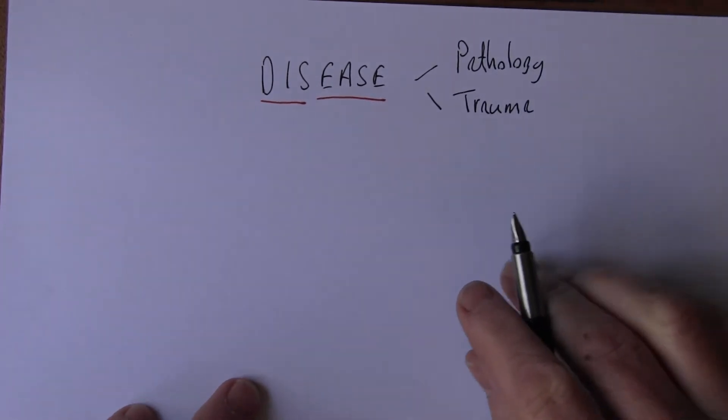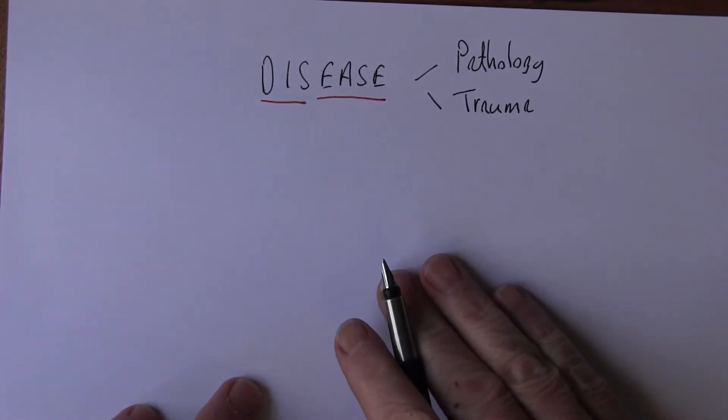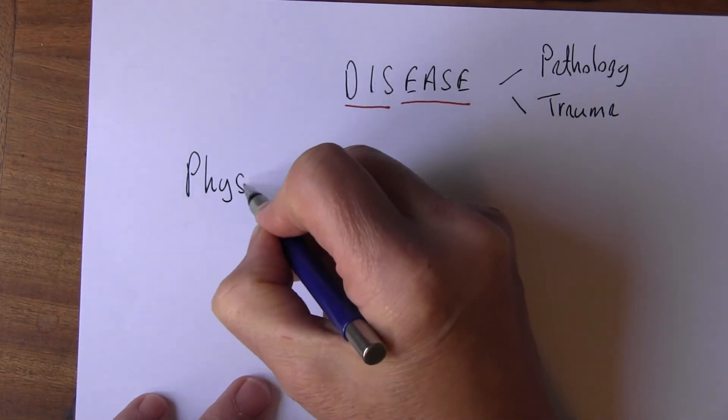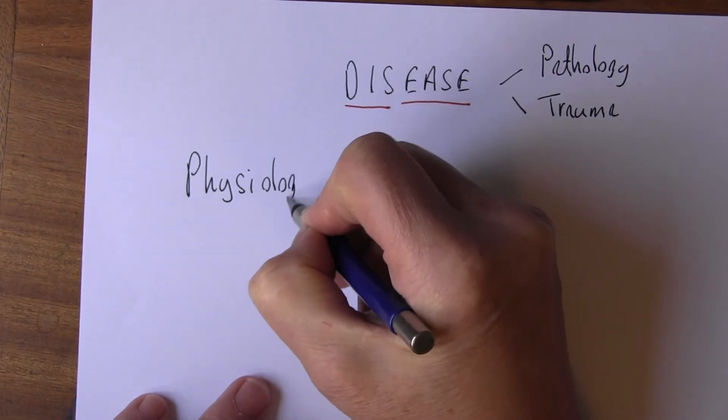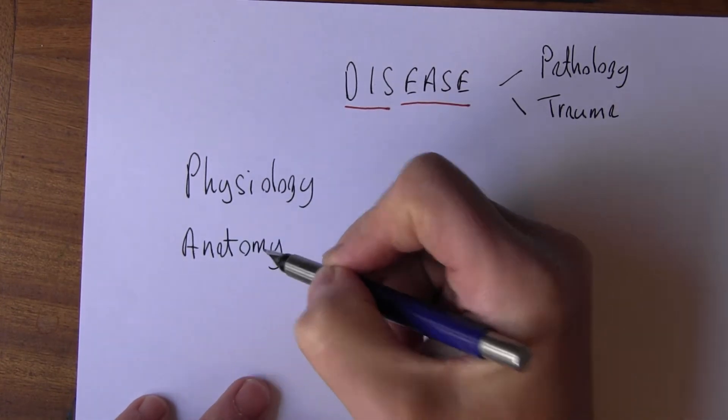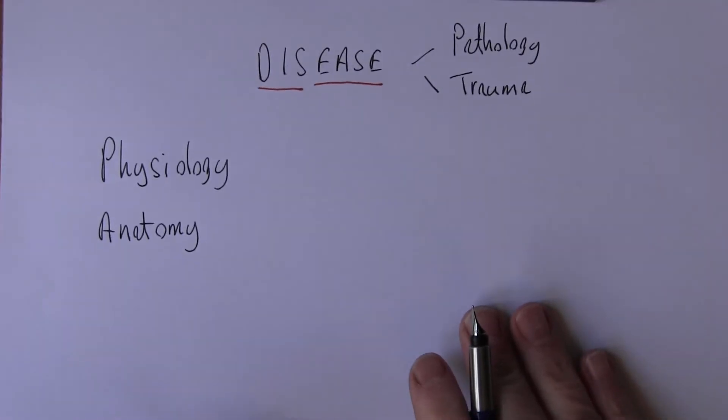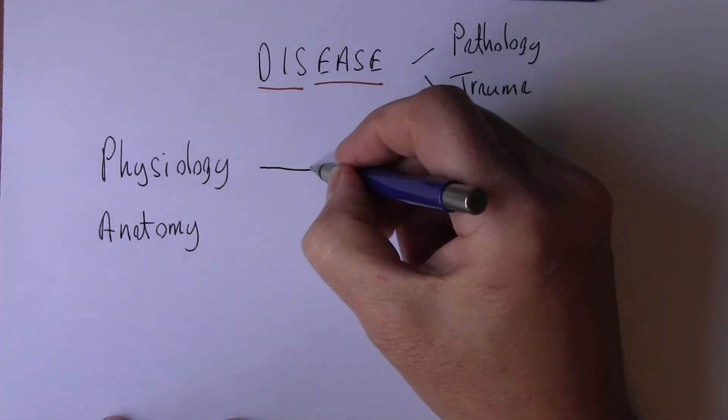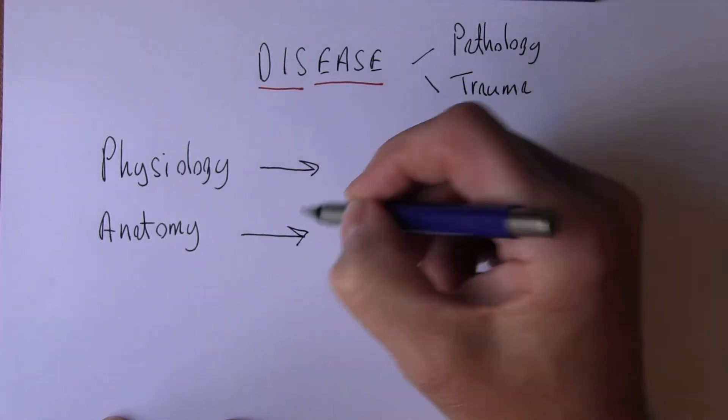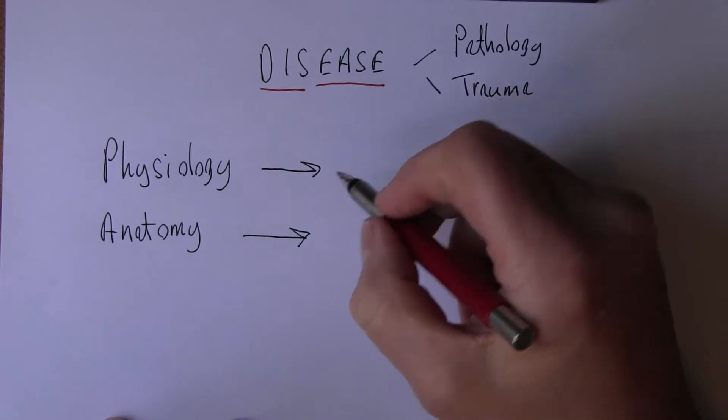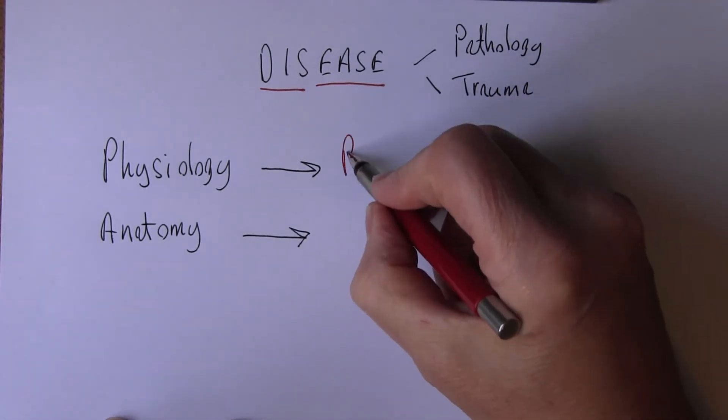There's those two causes of disease. Now let's think about the basic terms: physiology and anatomy. Physiology is the study of normal body function and when that goes wrong, as anatomy can go wrong, when physiology goes wrong we call the study of abnormal physiology pathophysiology.